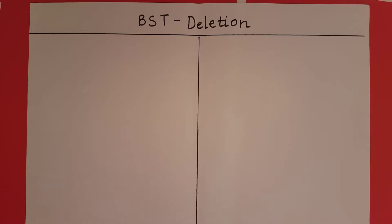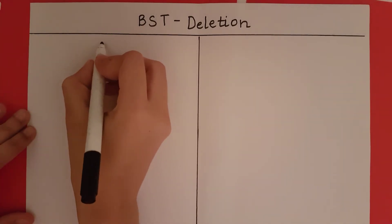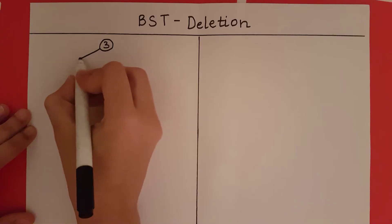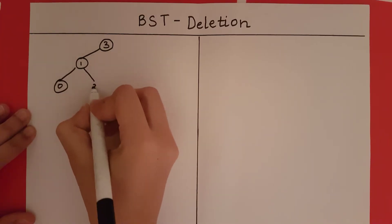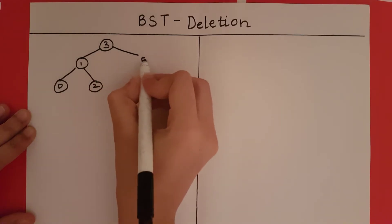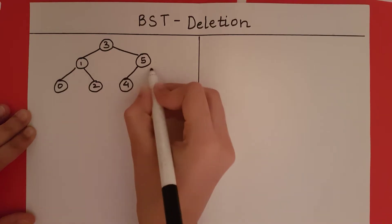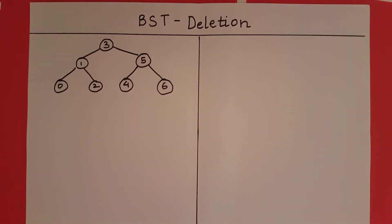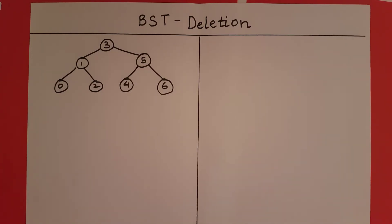Let's look at the deletion using an example. This is going to be my binary search tree. When we want to delete a node from this tree, that node can be of three types. Case 1: it can be a leaf node. Case 2: it can be a node with one child. Case 3: it can be a node with two children. Let's look at how we handle these cases one by one.